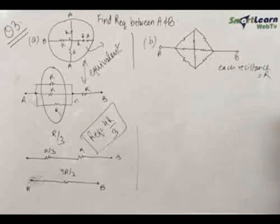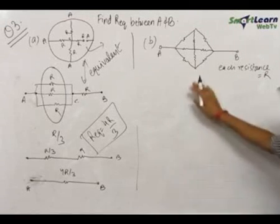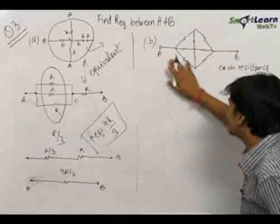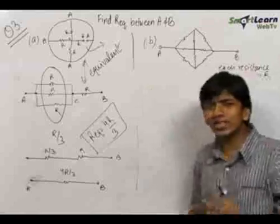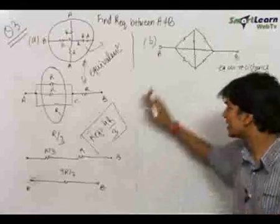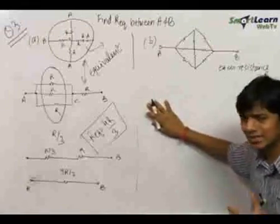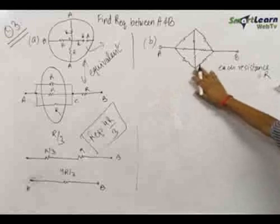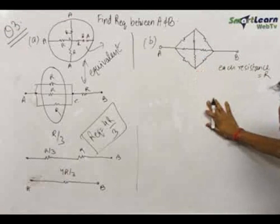Now let us look at part B. In part B this is a typical and interesting question. In these type of questions you should also look at factors like symmetry and such things — it eases out the question. So the first thing in this question: we see that each of the resistances are equal to R and we need to find out the equivalent resistance.